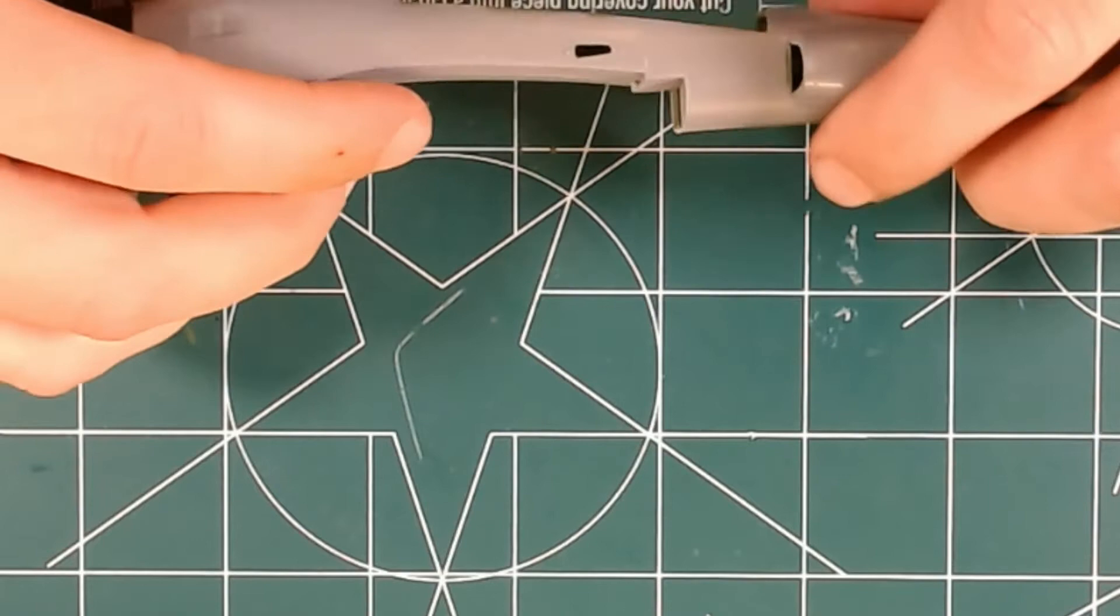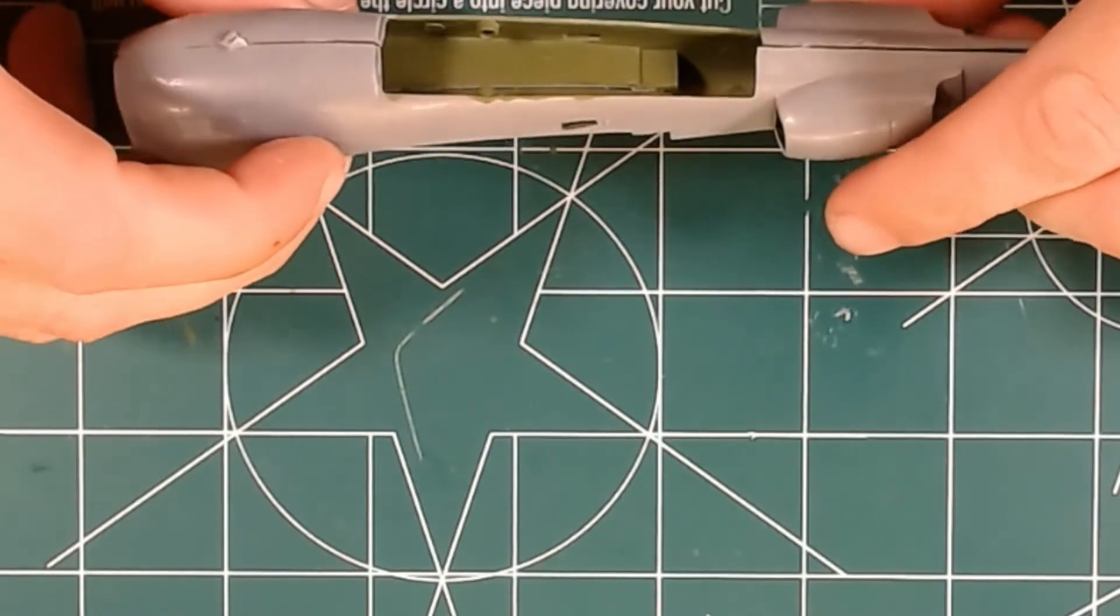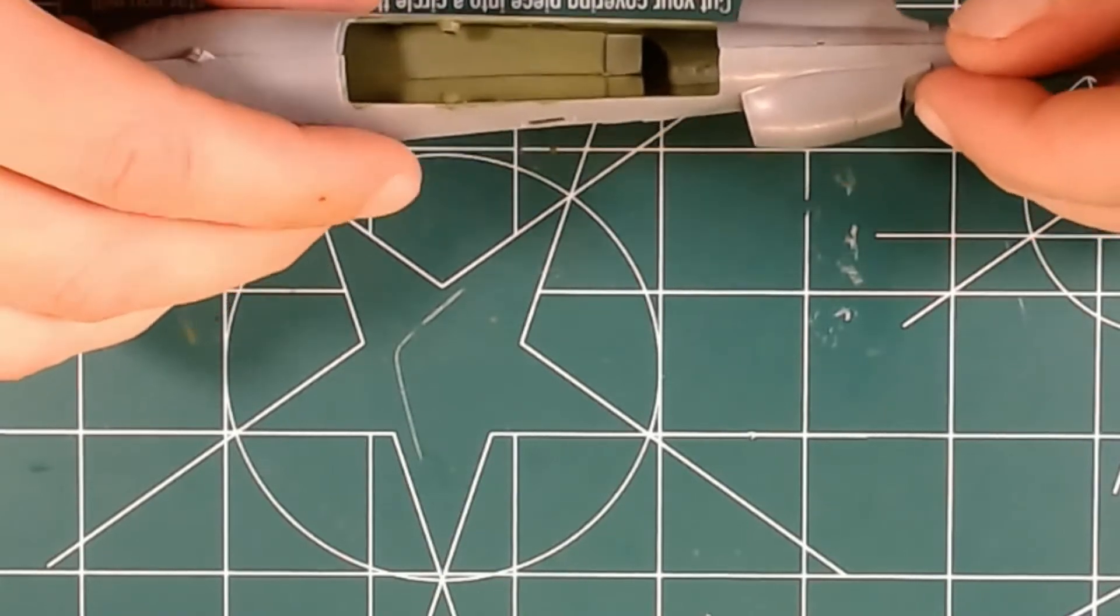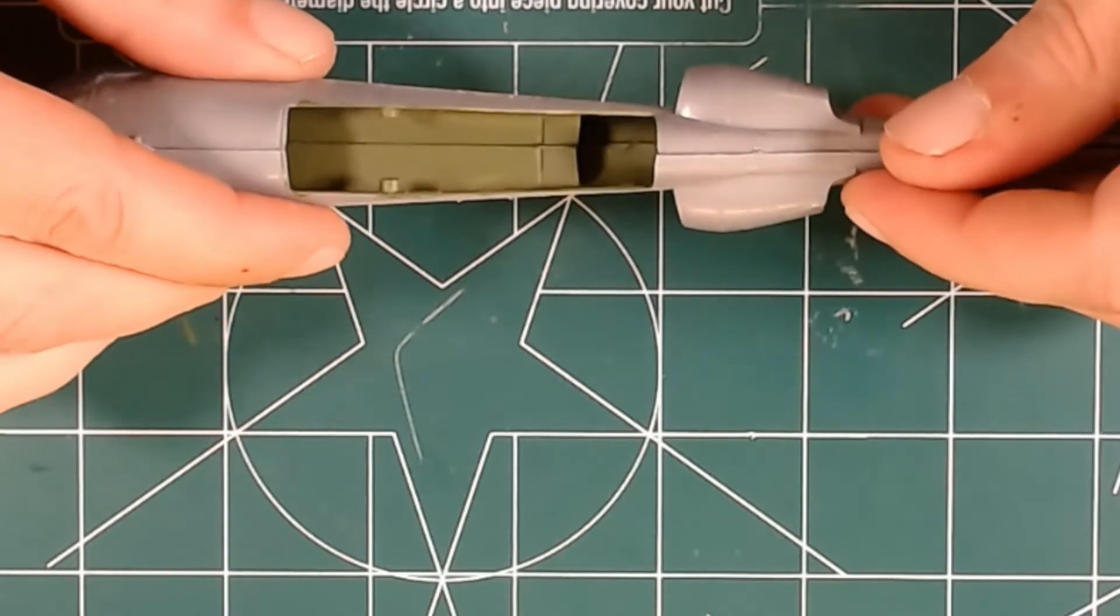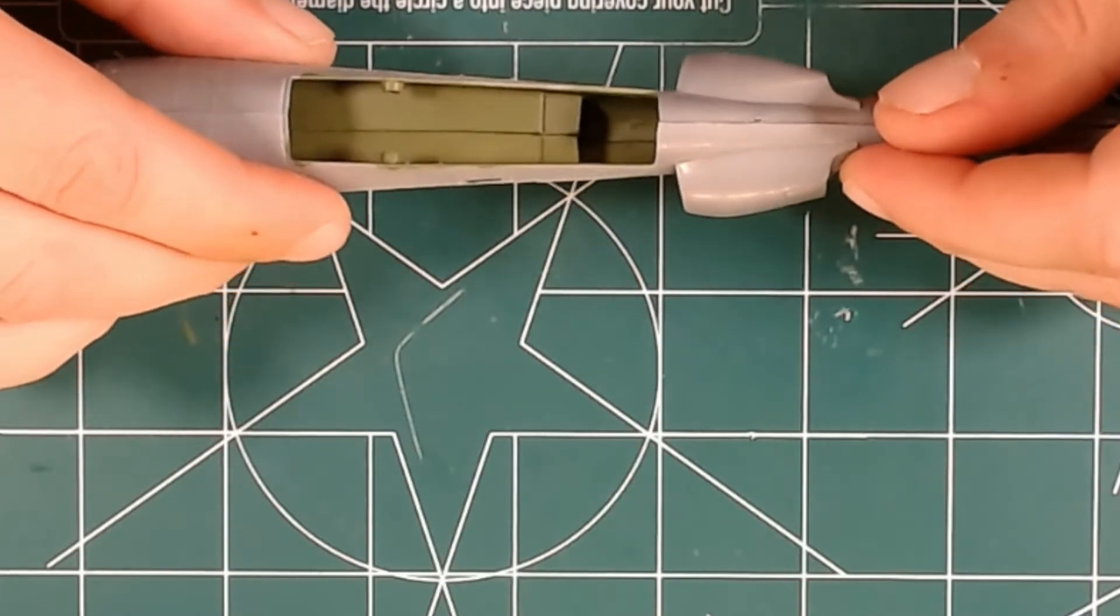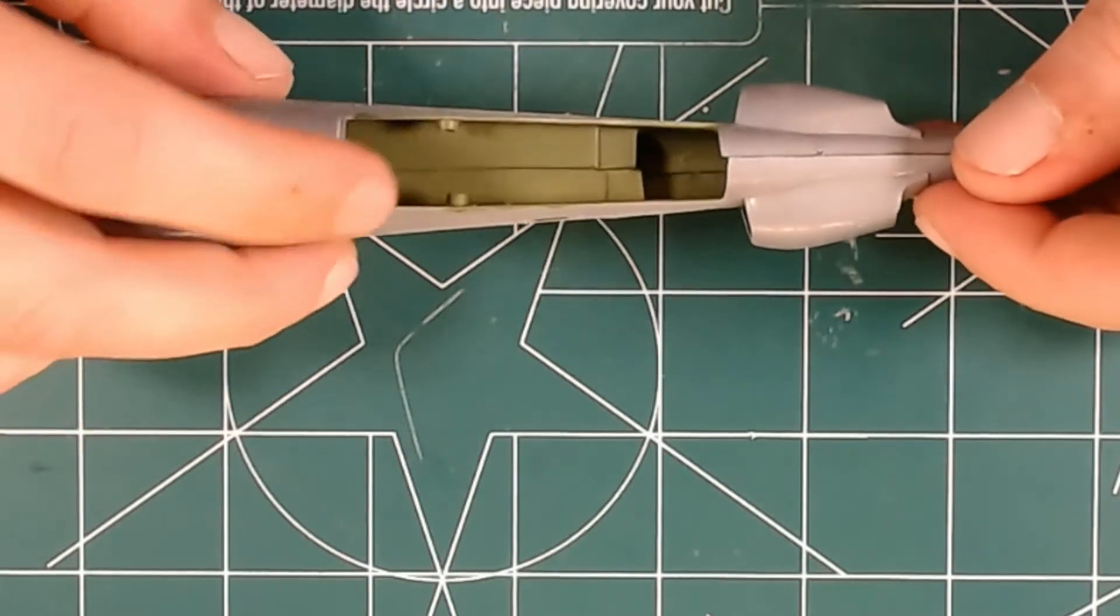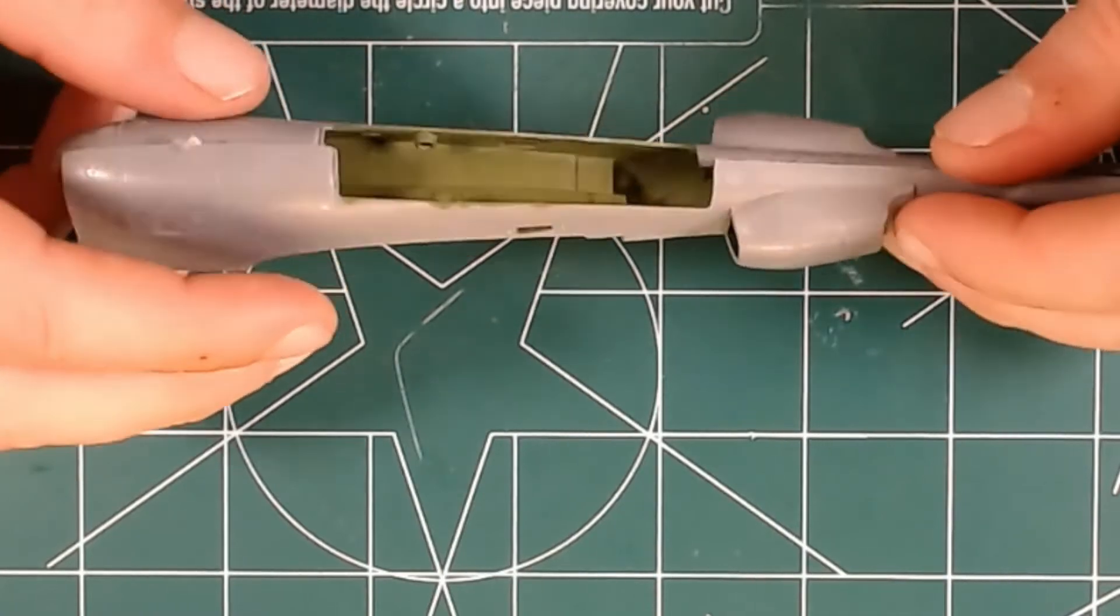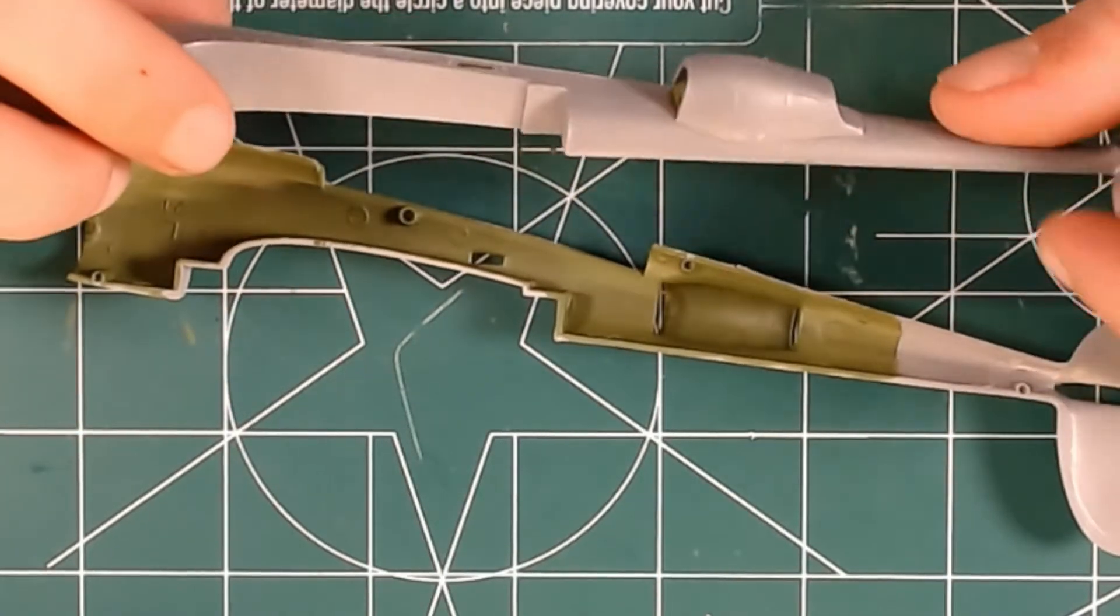And the instructions state that these are interior green, but they're not. The landing gear bays are actually aluminum. And these bays, these particular bays have zero, and I mean zero, there's nothing in there. It's just flat plastic. And it's in a seam. And that's it. Landing gear goes in these two pins, in these two holes.